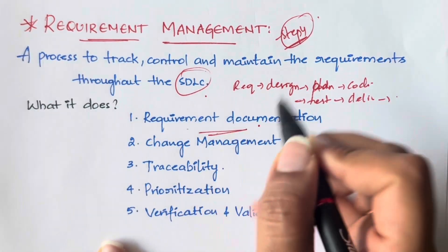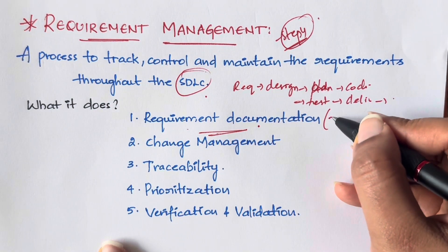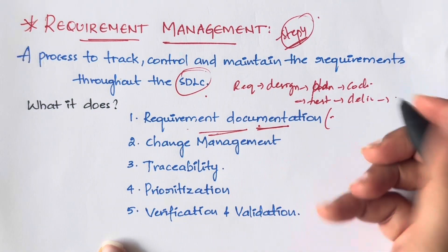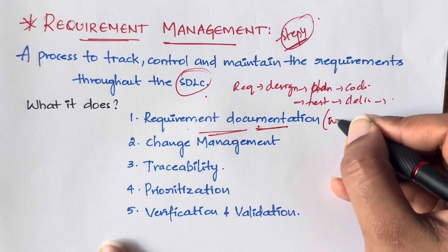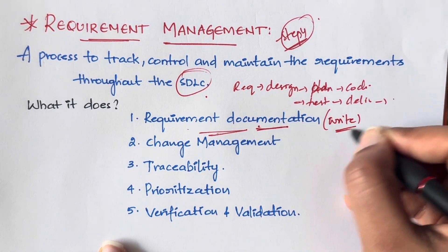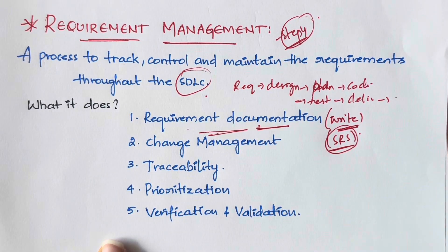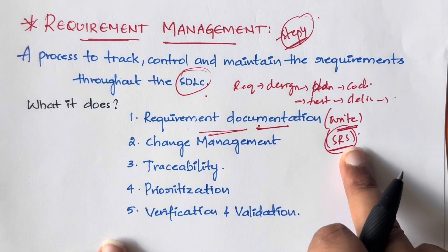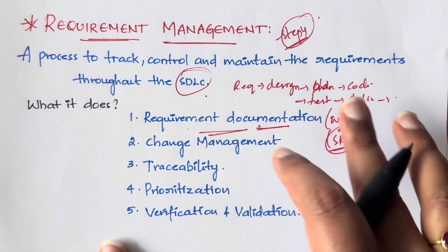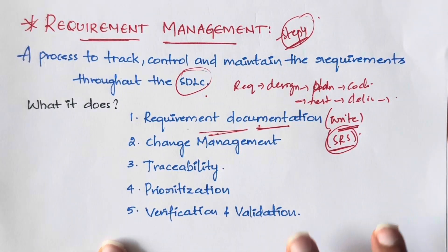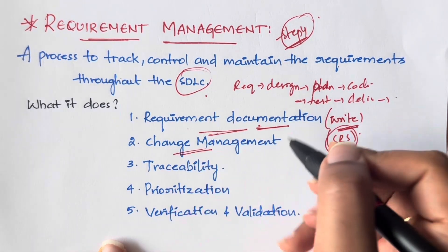The first is requirement documentation. What we do here is document each and every requirement — that means writing everything down in a document, like a Word document. You write down every single requirement, and that becomes your SRS document — the Software Requirement Specification document. I've done a video about this as well, so you can watch that.